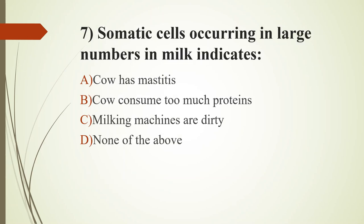The answer is option A, the cow has mastitis. Option B, the cow consumed too much protein; option C, milking machines are dirty; option D, none of the above. The answer is option A, the cow has mastitis. Some bacteria that cause mastitis are Staphylococcus aureus, coagulase-negative Staphylococcus, Streptococcus agalactiae, and Streptococcus dysgalactiae.